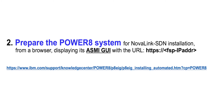Step 2: we prepare the Power8 system for a Greenfield NovaLink SDN installation by using a browser displaying the ASMI GUI of the Power8 system. The detailed steps for doing so can be found in the URL displayed.